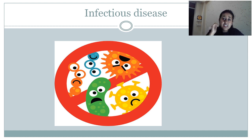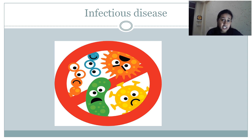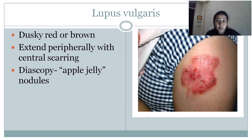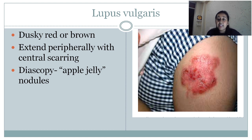Now coming to infectious diseases. In infectious disease we mainly read about skin tuberculosis, fungal infections, bacterial infections, and viral infections. You should know how these diseases appear clinically so that you can solve the questions easily. First, coming to lupus vulgaris — this is an example of skin tuberculosis. Whenever a patient has good immunity and because of some endogenous spread, if a patient has tuberculosis of the lungs, there is endogenous spread of the TB bacilli which can cause lupus vulgaris.